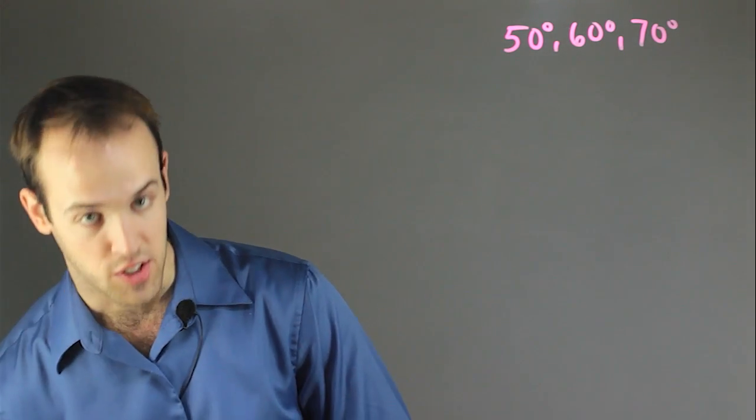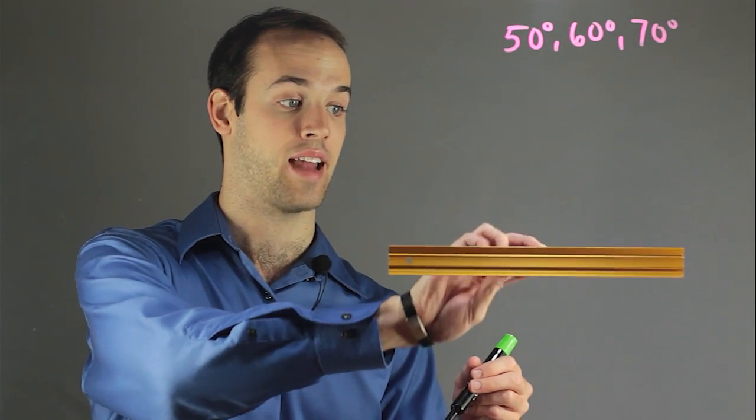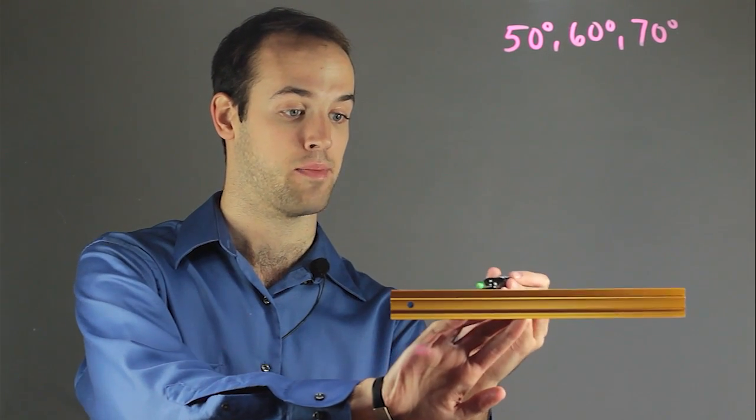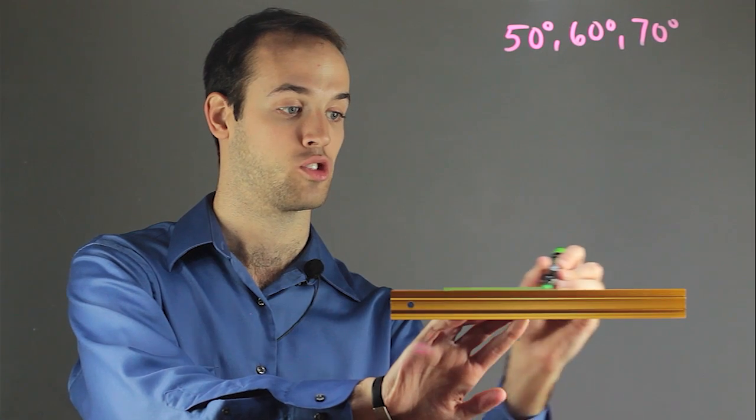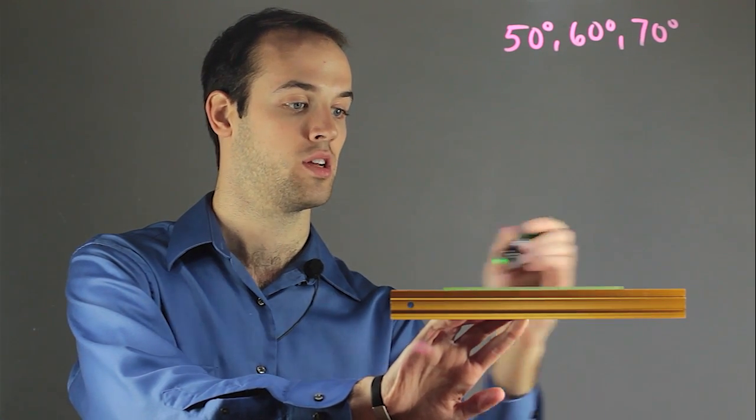The first thing I want to do is draw my base. And since the base doesn't have any angles, it doesn't matter exactly what it looks like. So I'm just going to draw a straight line just like this.